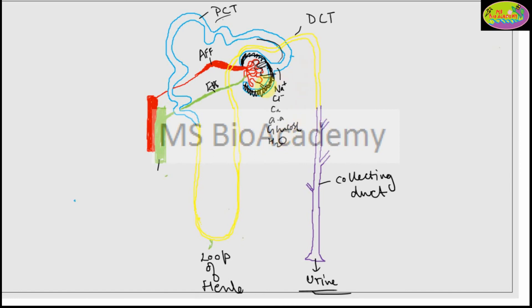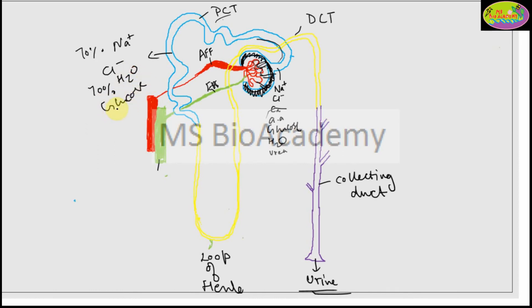Once the filtrate moves through the proximal convoluted tubule, essential substances need to be reabsorbed so they are not wasted through urine. In the PCT, reabsorption includes: about 70% of sodium ions, chloride ions, and water; and greater than 95% of glucose and amino acids are reabsorbed here.